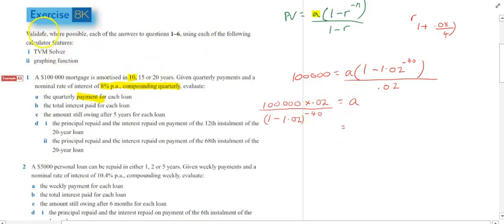Get a calculator out. Type it in. Just make sure you write this down right. I've stuffed up my brackets. 1.02 to the power of negative 40 in brackets. And type it in your calculator. Get an answer. $3,655.57.